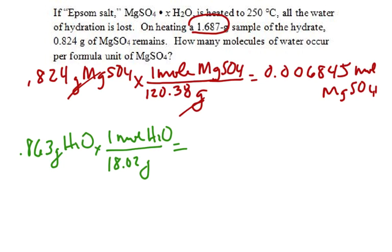This would be 18.02 grams for one mole of water. And if we work that out, I get 0.0487 moles of water. That means my hydrate has this many moles of magnesium sulfate and this many moles of water.